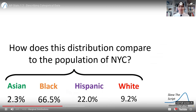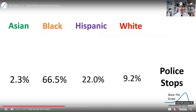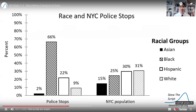A natural next question is: how does this distribution of who was stopped compare to the general population of New York City? To analyze that, we can use a side-by-side bar graph. This is the marginal distribution of who police stopped, and this is the distribution of New York City's general population according to the 2020 U.S. Census Bureau American Community Survey. Note that these percentages are only out of the racial groups listed here. So we can go ahead and compare these distributions using a side-by-side bar graph.